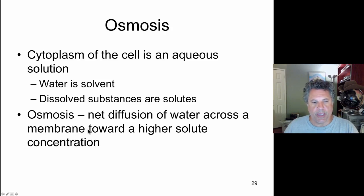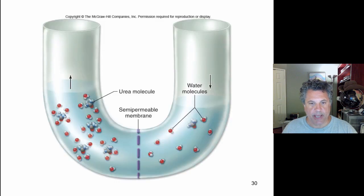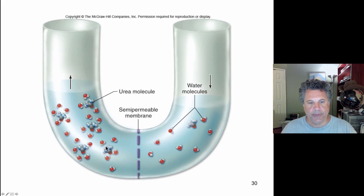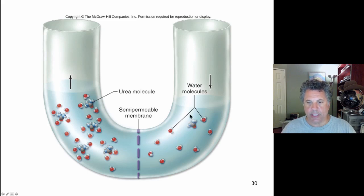Water is moving from a high concentration of water molecules to a lower concentration of water molecules. Consider this case: we have a semi-permeable membrane and the solute is urea, an organic molecule. In one part of the tube we have a higher concentration of urea than the other side. In terms of water concentration, the water concentration is higher on the right than on the left because the solute concentration is higher on the left.